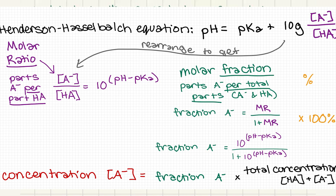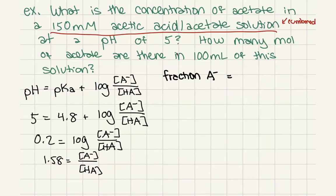If we want the fraction, we need to know per parts total, not per part of acid. And so the parts total is going to be equal to 1 plus our 1.58 parts of our base. So what we could do is we could find out the fraction that is A minus is going to equal 1.58 divided by 1 plus 1.58. So we're going to get 1.58 divided by 2.58, and that'll give us a value of 0.61.